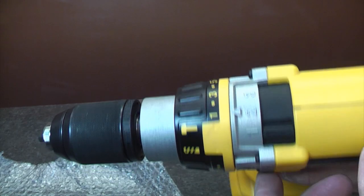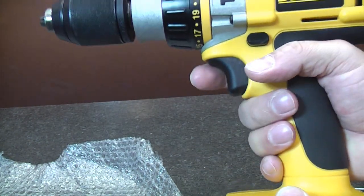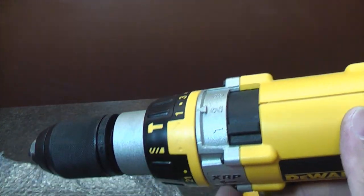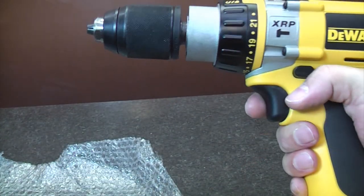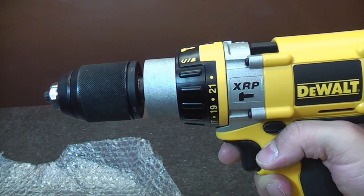This is an 18-volt DeWalt drill from the XRP range, and replacing parts on a drill like this is very easy because it is designed so that you can replace parts when they wear out. Most of the parts on here are extremely easy to change.